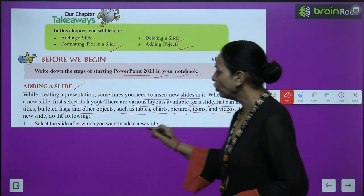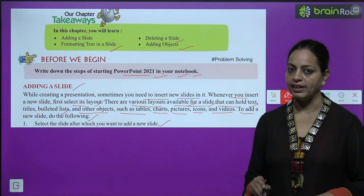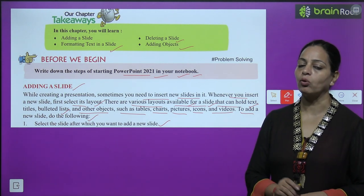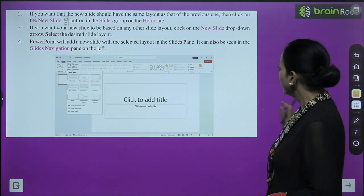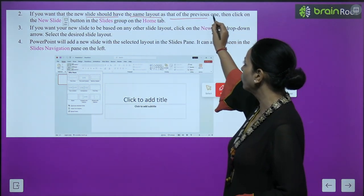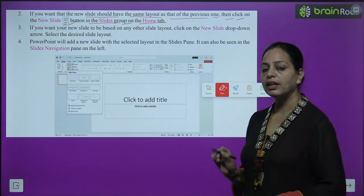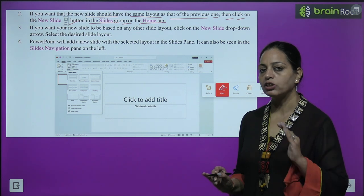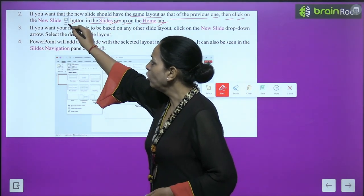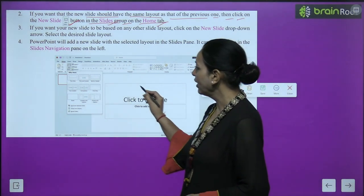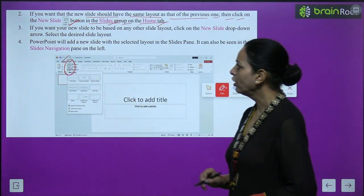To add a new slide, do the following. First, select the slide after which you want to add a new slide - the slide after which we want to insert the new slide. Second, if you want the new slide to have the same layout as the previous one, click on the New Slide button in the Slides group on the Home tab. You can see the New Slide button on the Home tab, and also under Insert.